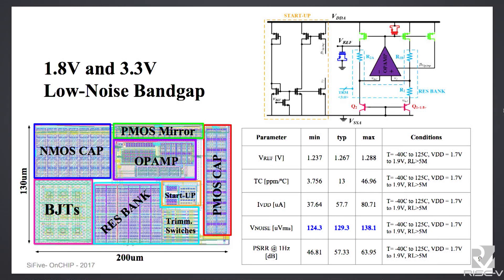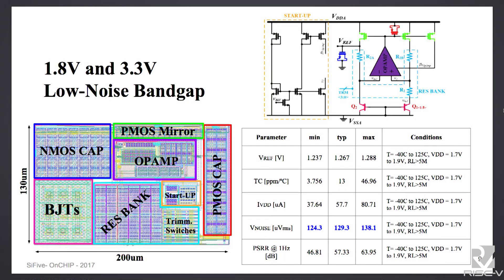Now we're going to show all those blocks and highlight some of the details. These are not toy blocks — they have been designed with an aggregated 20-plus-year experience team, so these are robust. We are using operating conditions of minus 40°C to 125°C, and also ±10% for the voltage rails, in this case for 1.8 volts. We have low-noise biasing. The power consumption is quite high in this case because we are using this for high-resolution data converters.